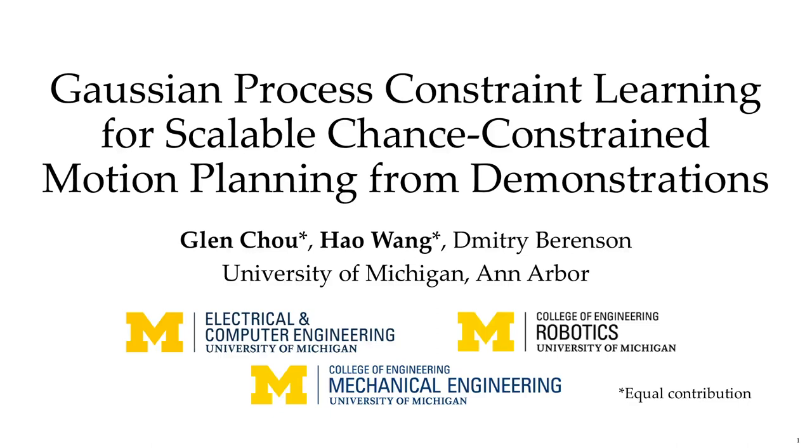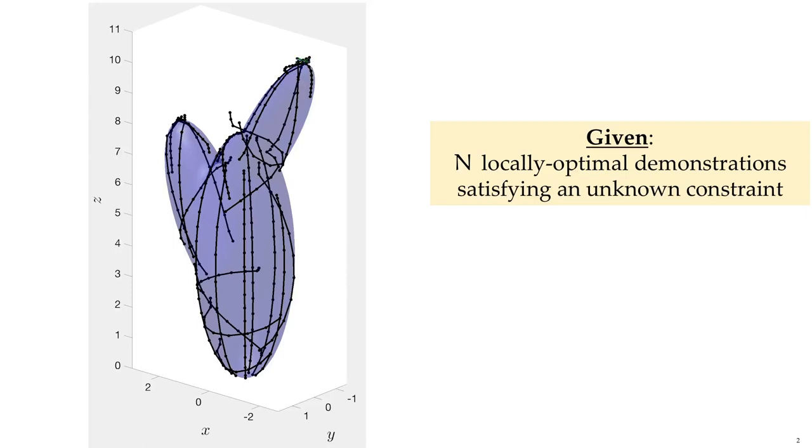In this work, we scale up constraint learning from demonstrations using Gaussian processes. We are given demonstrations of a system, like a quadrotor, which satisfy a complex unknown constraint like a non-convex obstacle.